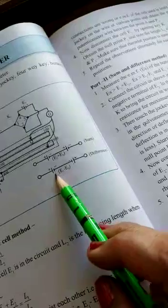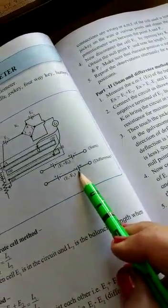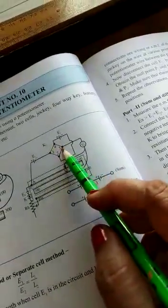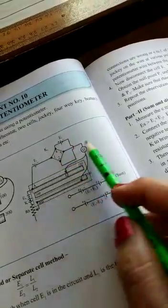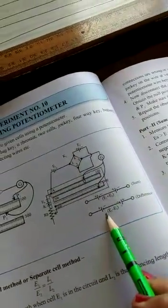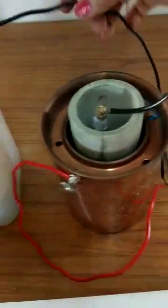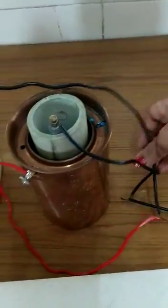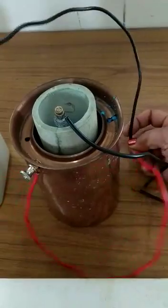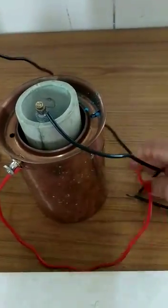So we will write L1 as 166. And now for L2, if you look at the circuit diagram, the negative of E1 should be connected to the negative of E2. See if you have four-way key, you can just reverse the keys. But now I am going to connect the negative of E1. This is the negative of E1. So I will connect it to the negative of this one.